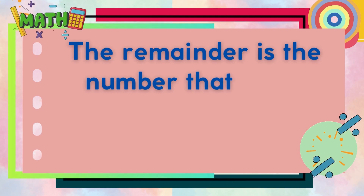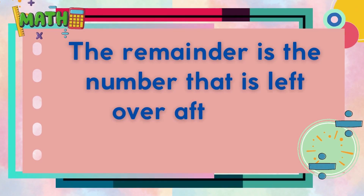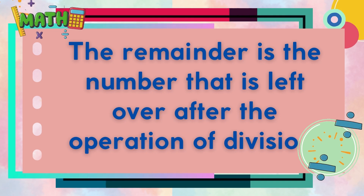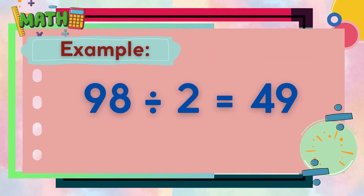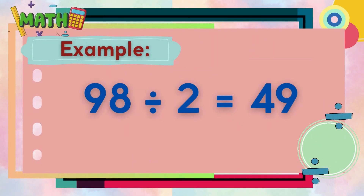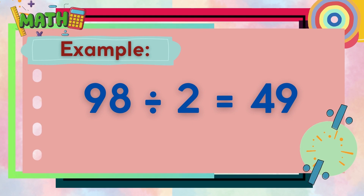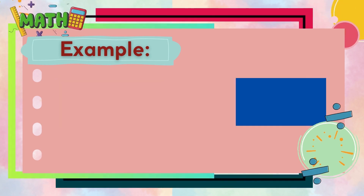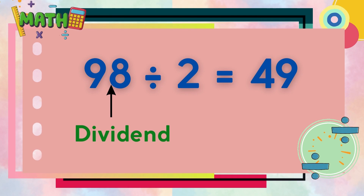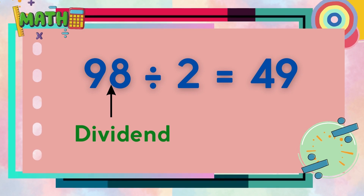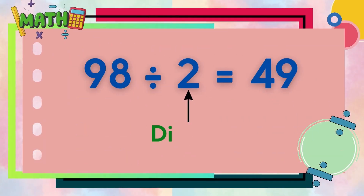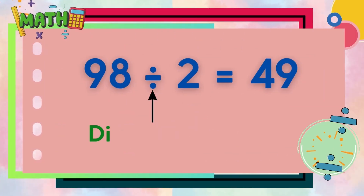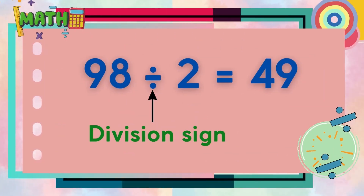Let's have this example: 98 divided by 2 is equal to 49. 98 is the dividend, 2 is the divisor, and the sign between 98 and 2 is the division sign.